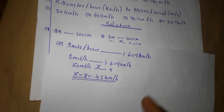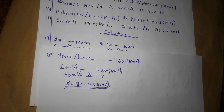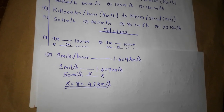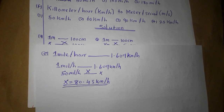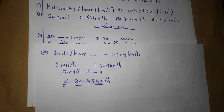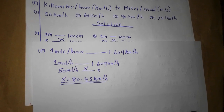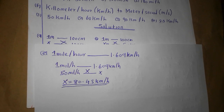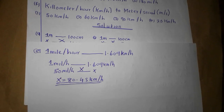So if you want to convert miles per hour into kilometers per hour, you simply multiply by 1.609 and you get your answer directly.